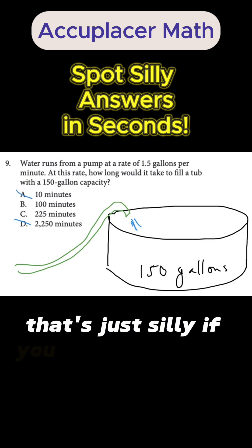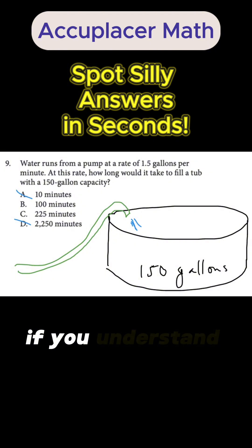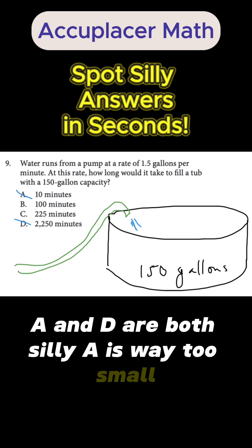That's just silly. If you understand the question, if you understand the scenario, if you think in concrete terms, A and D are both silly. A is way too small, D is way too big.